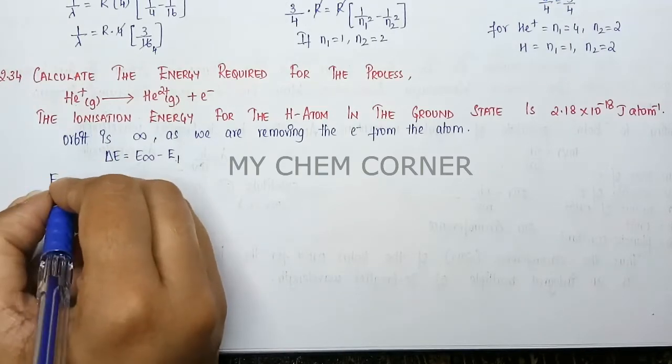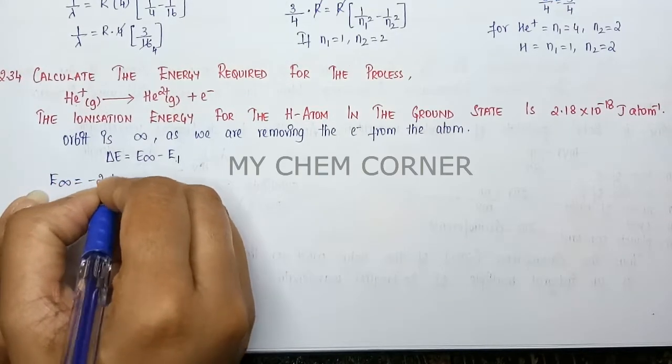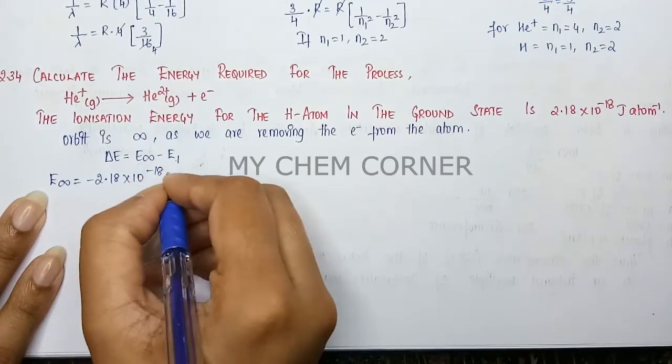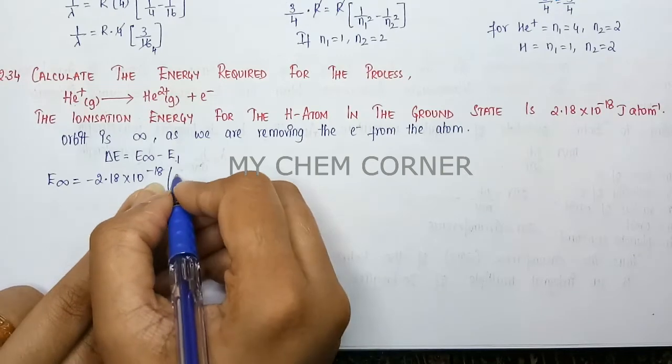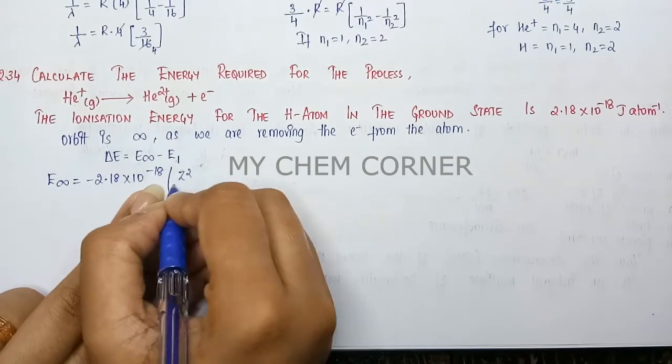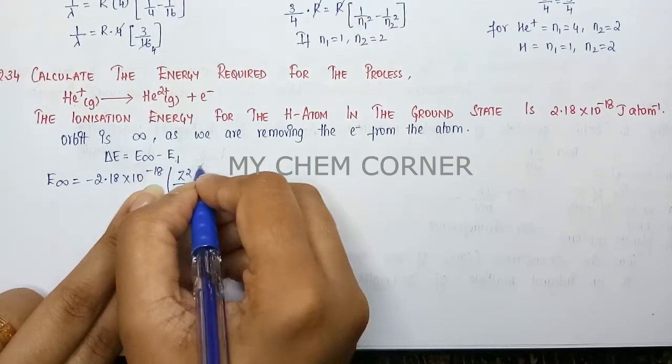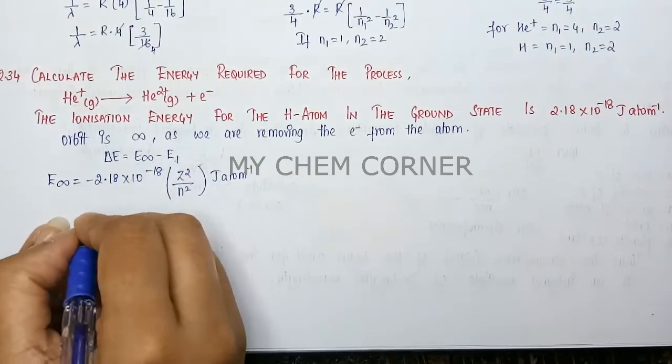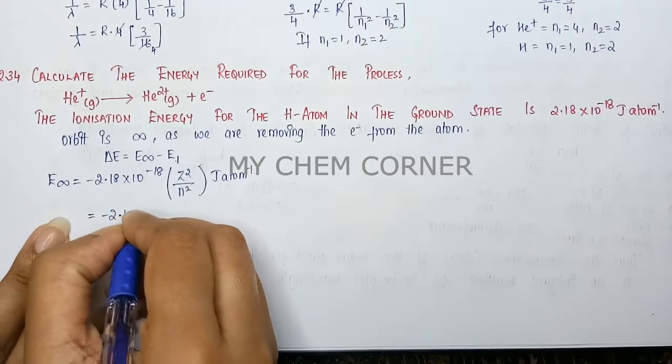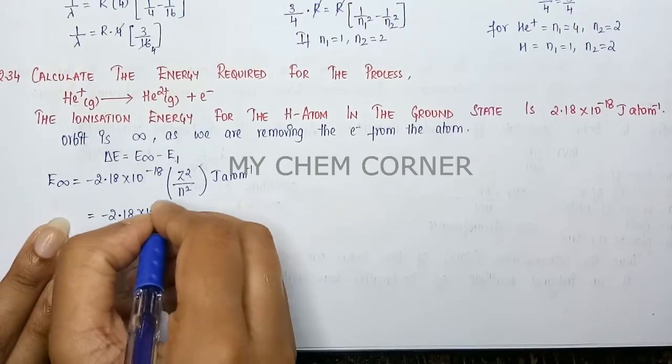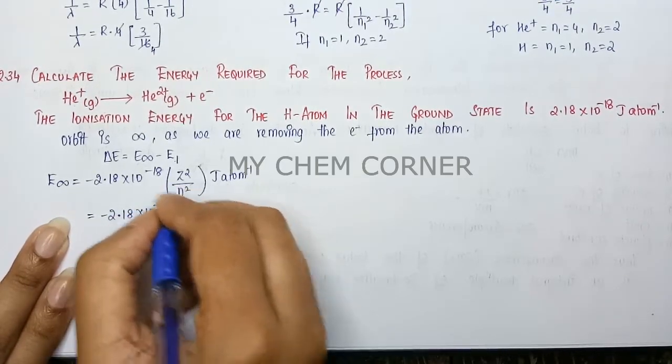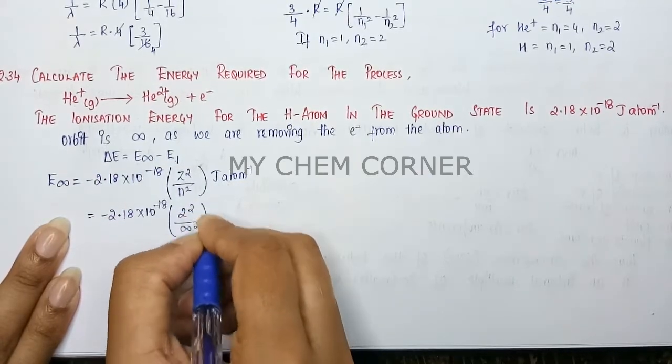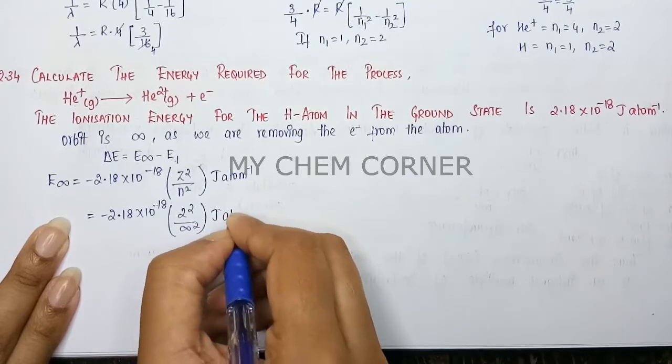E∞ is going to be -2.18×10⁻¹⁸ multiplied by Z²/n² joules per atom. This is the formula. So we have -2.18×10⁻¹⁸, and Z² for helium is 2, so it's 2²/∞² joules per atom.